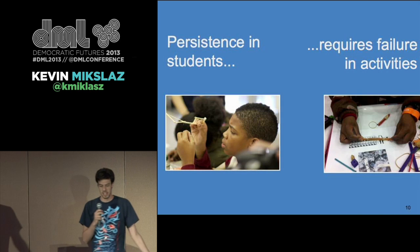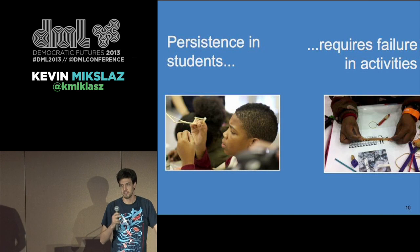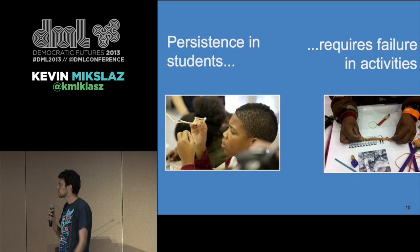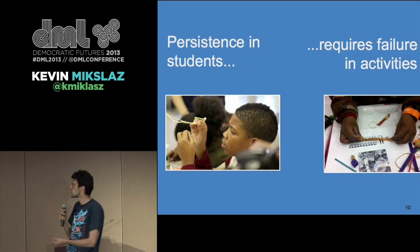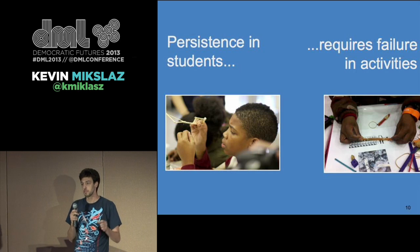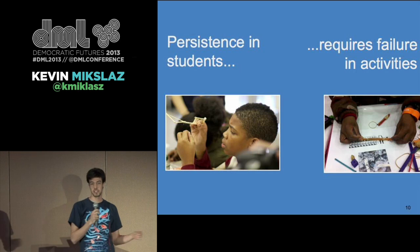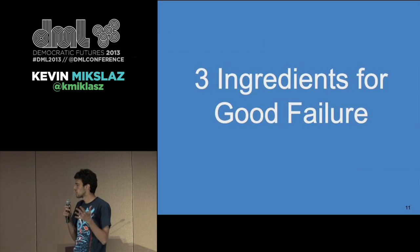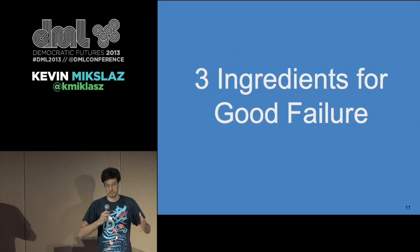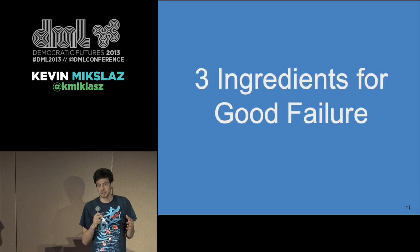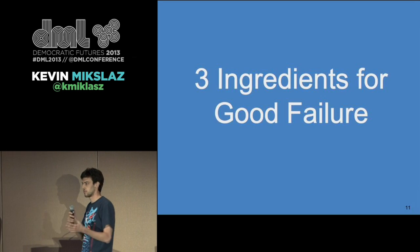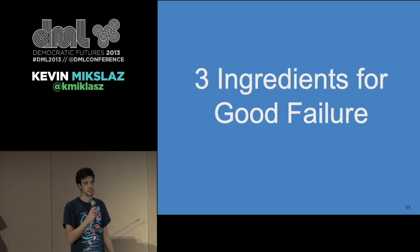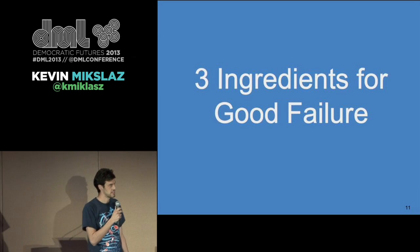Iridescent didn't find all the persistent kids in the neighborhood — rather, they created persistence. They realized that persistence in students required failure in activities. If there was nothing to fail at, there was nothing to persist through. So they really carefully crafted their activities in a way that led to failure. I'd like to present the Iridescent recipe for failure — if you want to create an activity with good failure, here are some tips.